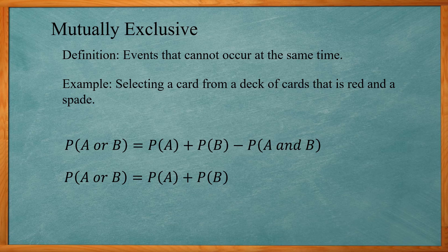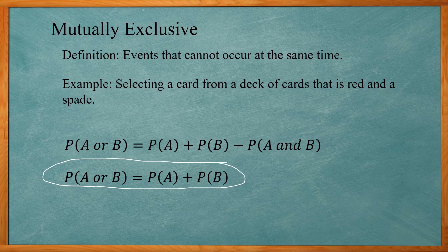Mutually exclusive events cannot occur at the same time. For example, selecting a card that is red and a spade — there's no card that satisfies both criteria, since a spade is a black card. For mutually exclusive events, the probability of A or B reduces to just the probability of A plus the probability of B, because the probability of A and B equals zero.